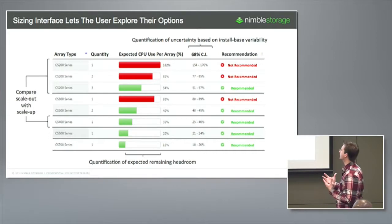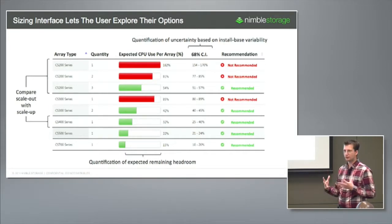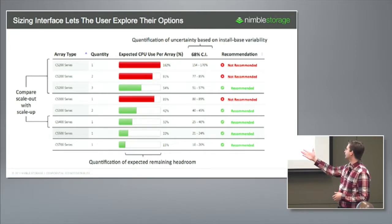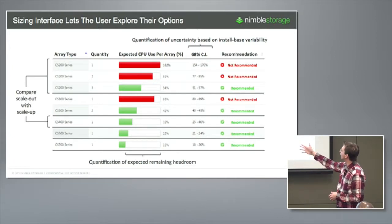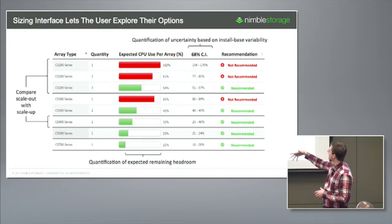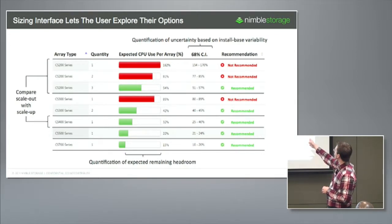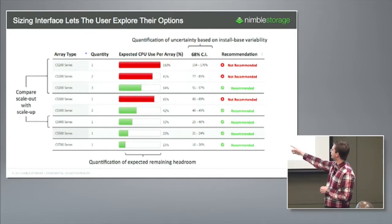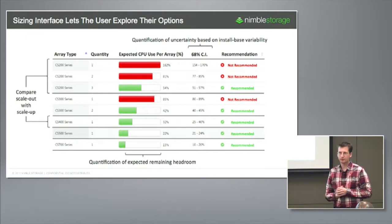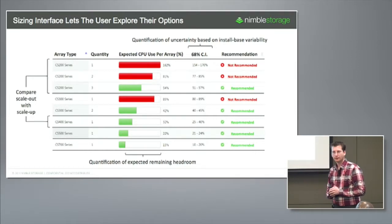From an output perspective, we provide flexibility in what solution you may want to select. We compare scale-out with scale-up options — for example, CS200 series versus CS400 series. For a particular workload, three CS200 arrays gives you an expected 54% CPU utilization with an error range of 51% to 57%, so that becomes recommended. If you want just one array, the CS400 series shows an expected utilization of 32%, and the 68% confidence interval is provided as well.